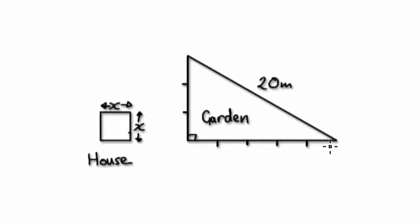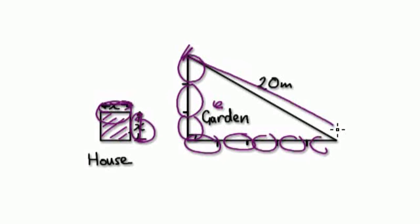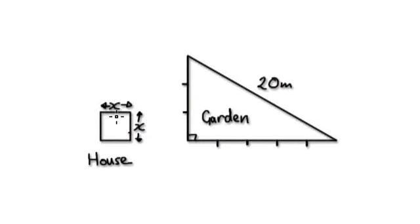Okay, have a look at this here. This is my house here. Let's say the width of my house is x and the height is also x. This is a garden over here. The height of the garden is three times the height of my house. And the length of the garden is five times the length of my house. This distance here is 20 meters. Work out the width of my house.